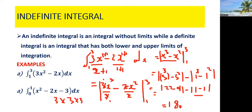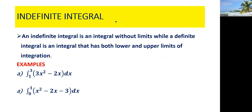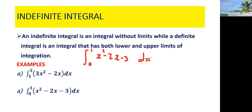Let's do example 2. You can pause the video and play it later if you want to copy what I've written so far. For example 2, we are integrating x squared minus 2x minus 3 with respect to x, with limits from 0 to 1. Note that the constant term 3 is x raised to the power 0.